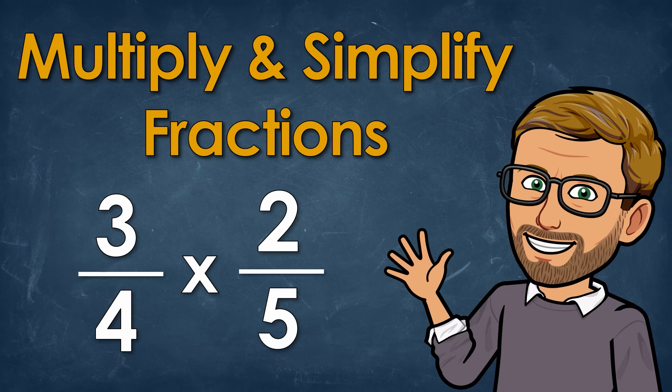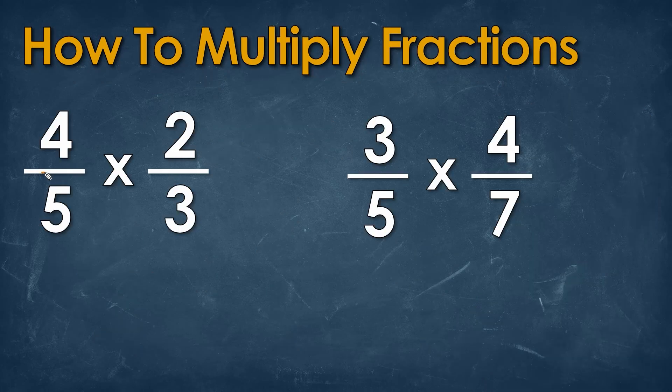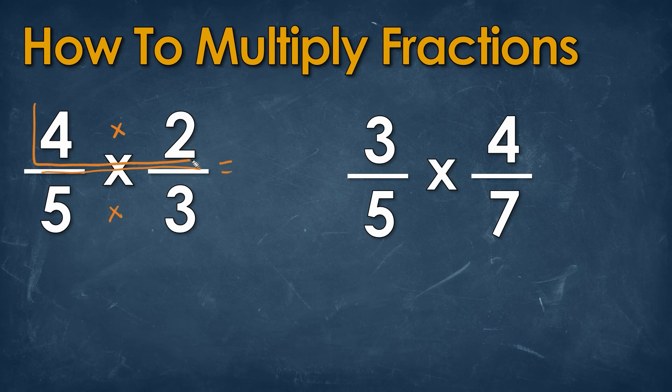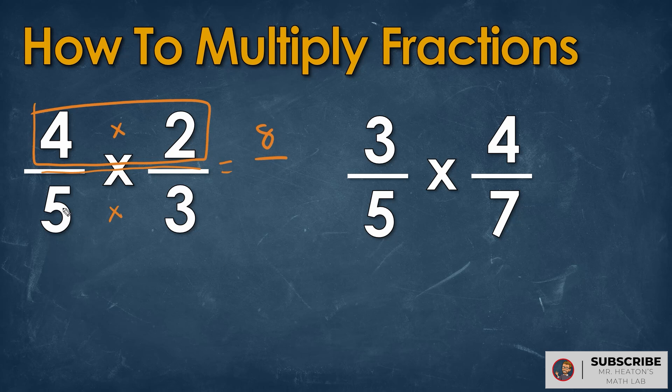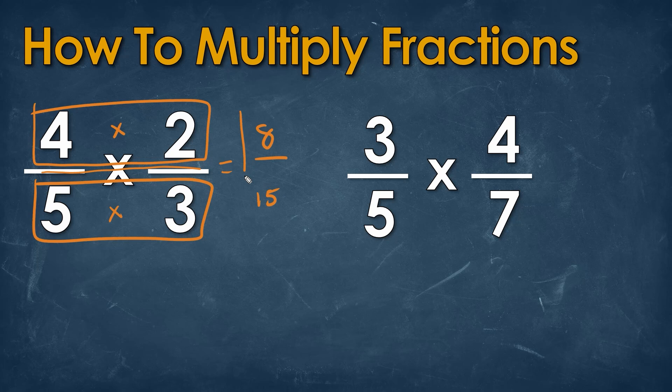In this video, we're going to learn how to multiply and simplify fractions. Multiplying fractions requires us to multiply the two values at top over the two values at bottom. Multiplying the two values at top will be 4 times 2, which will be 8, divided by the two values at bottom, which will be 5 times 3, which is 15. And that will be our answer.